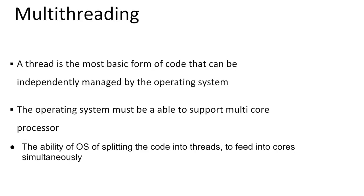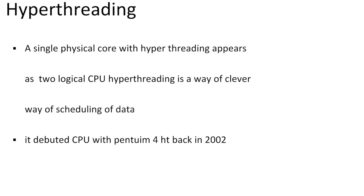A thread is the smallest sequence of code that can be executed by an operating system. Multi-threading is the ability for an operating system to take advantage of multiple cores by splitting up the code into threads and feeding it to different cores simultaneously.